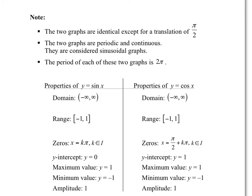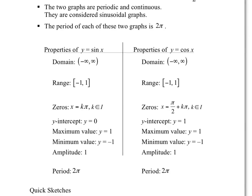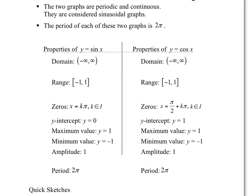The period of each graph is 2 pi, which makes sense — because if you go around the unit circle, you go 2 pi and then restart all the values. So 2 pi makes sense. Some properties of sine and cosine: the domain of each function is from negative infinity to infinity. There are no places where x doesn't exist.